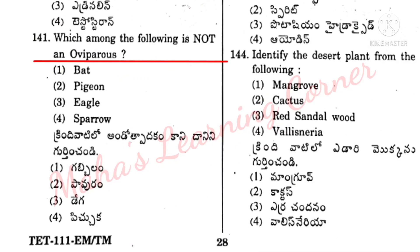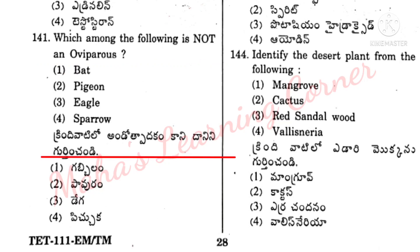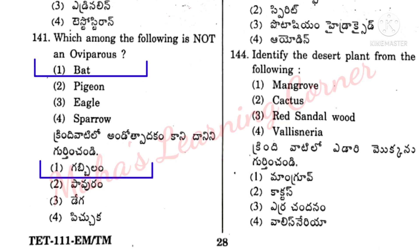Which among the following is not an oviparous? Krindi vatil lho undothpathakon kaanidhan ni guttin chandhi. Correct answer, Option 1: Bat. Gabbilam. It is the egg-free kshiradam.